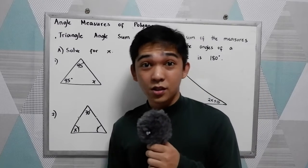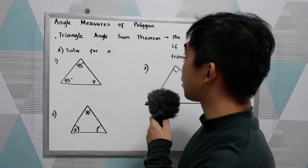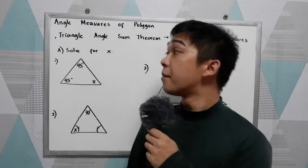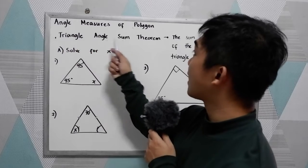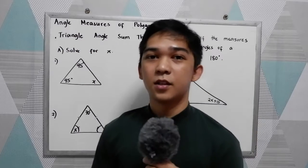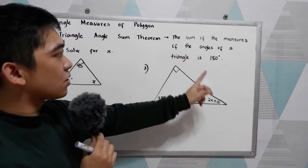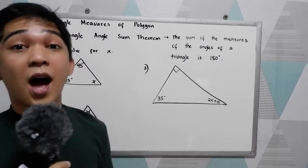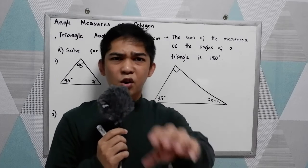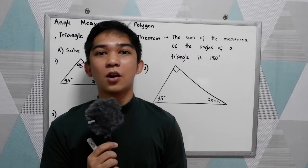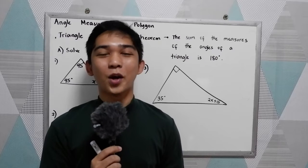Good day everyone, today we're going to discuss the angle measures of polygons. So we have our first theorem, triangle angle sum theorem. The sum of the measures of the angles of a triangle is equal to 180.